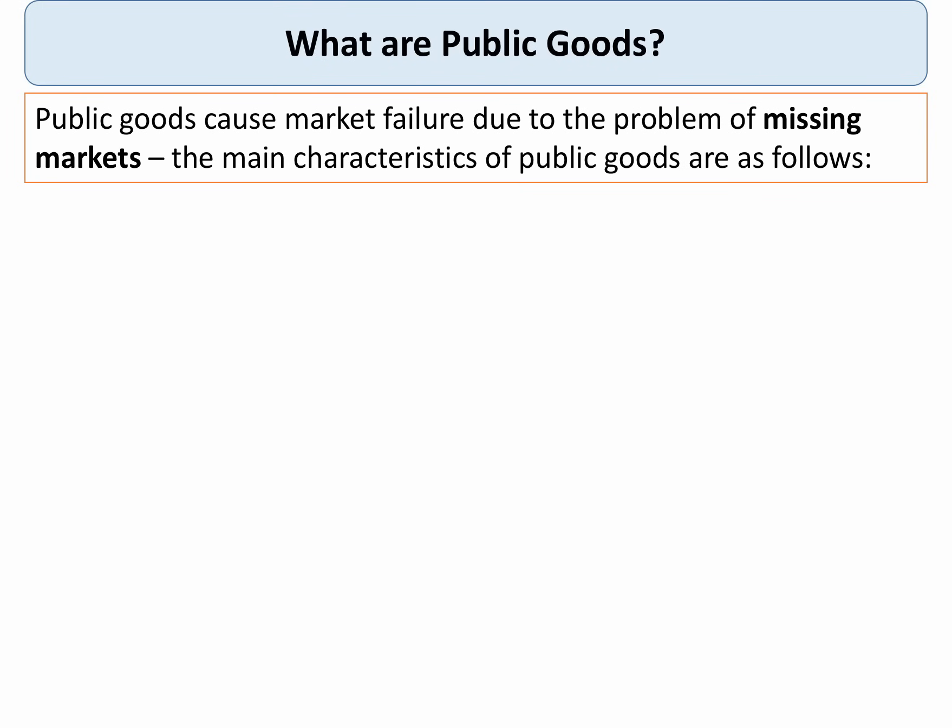Public goods are essentially collective consumption goods. Public goods cause market failure due to the problem of missing markets. In other words, the private sector may in part or in whole fail to provide essential public goods.